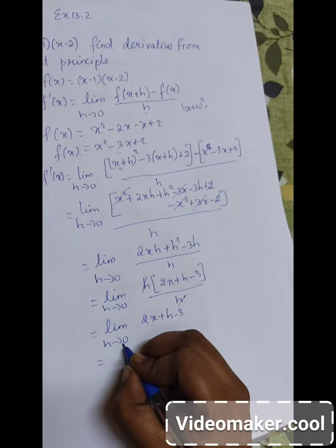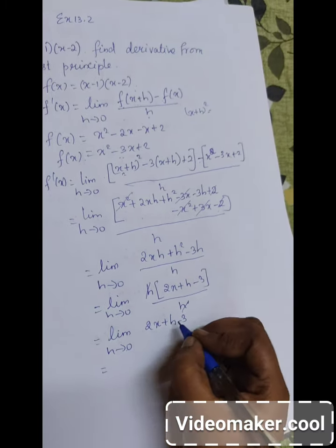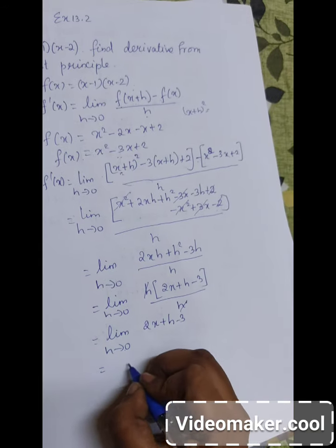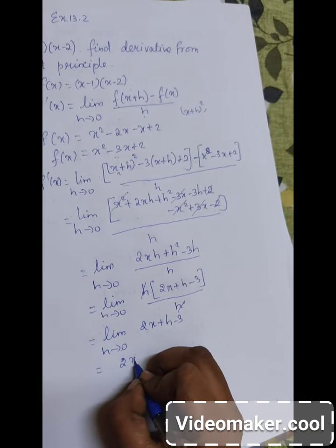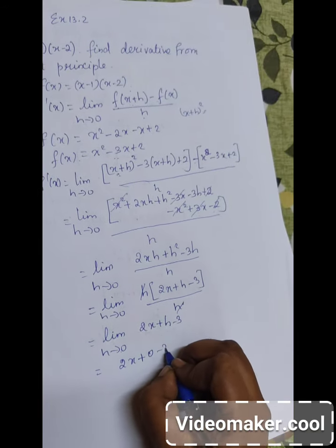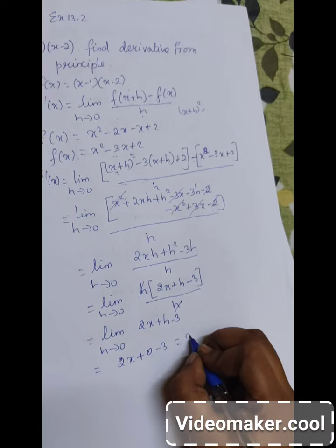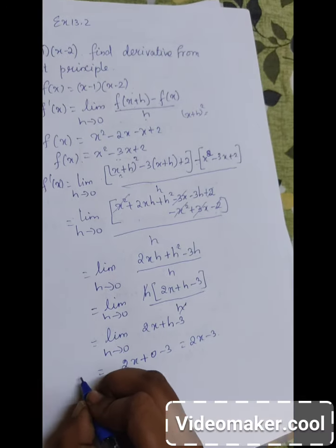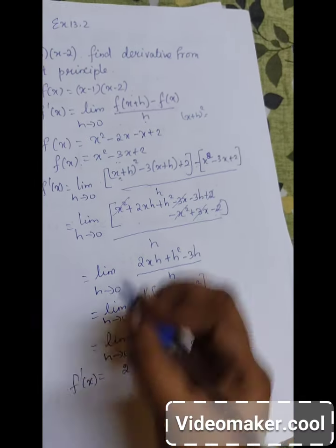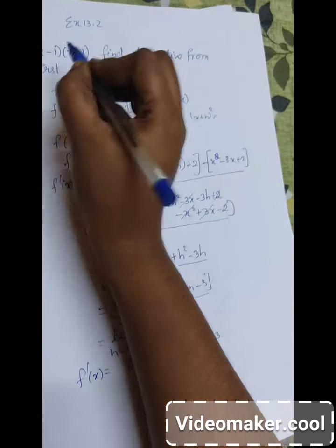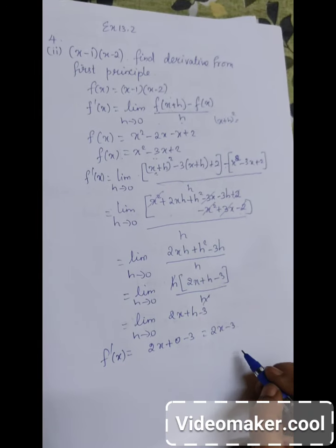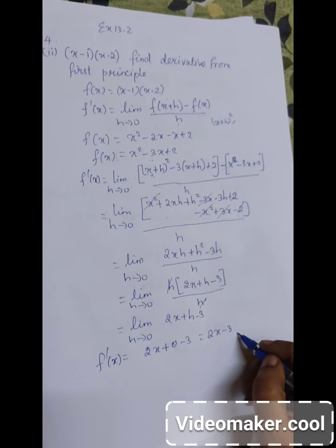After that we substitute the limit. Substituting h equals 0, we get 2x plus 0 minus 3, which equals 2x minus 3. So the derivative of the given function is 2x minus 3.